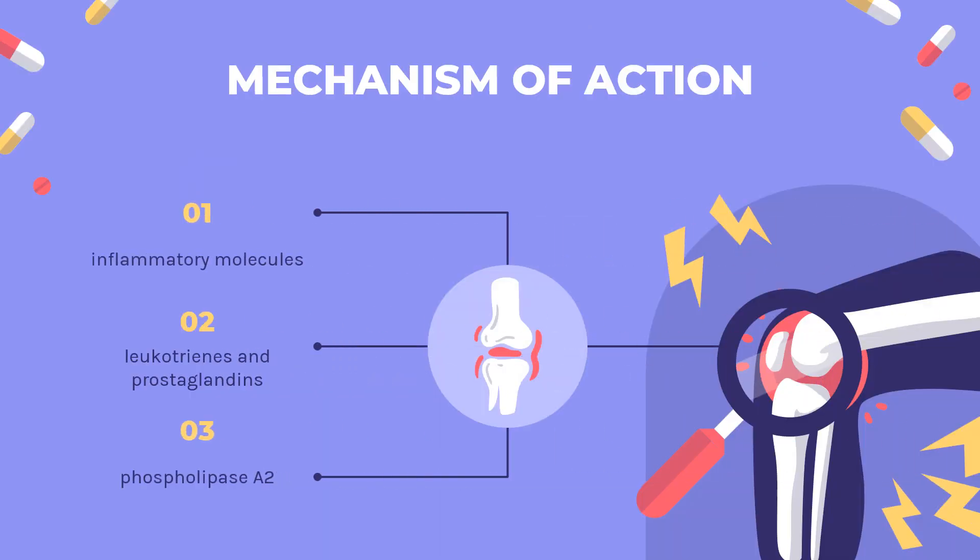Mechanism of Action: Although the exact mechanism of action of sulfasalazine is not fully understood, it is thought to be mediated through the inhibition of various inflammatory molecules. Research has found that sulfasalazine and its metabolites, mesalazine and sulfapyridine, can inhibit leukotrienes and prostaglandins by blocking the cyclooxygenase and lipoxygenase pathways.